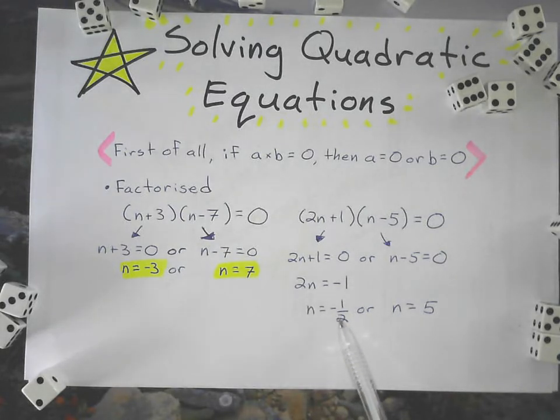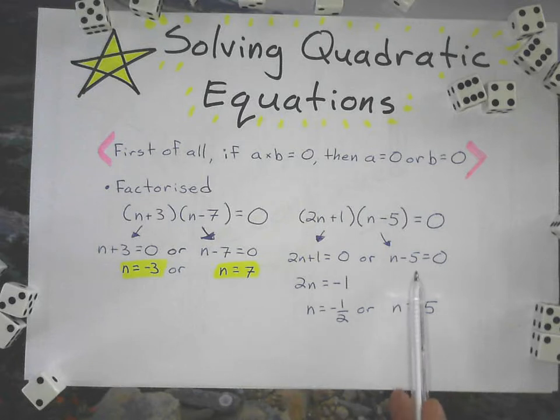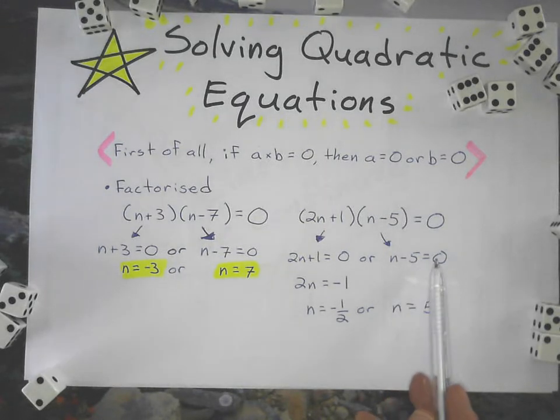You could write it as negative 0.5 if you want to, or just leave it as a simplified fraction. The other equation is just a one-step linear. If n minus 5 equals zero, then n equals five.